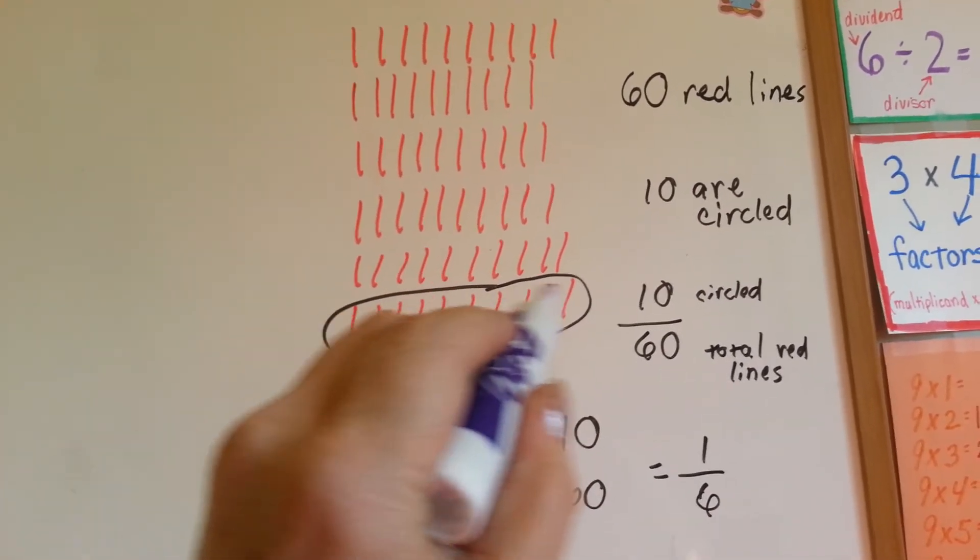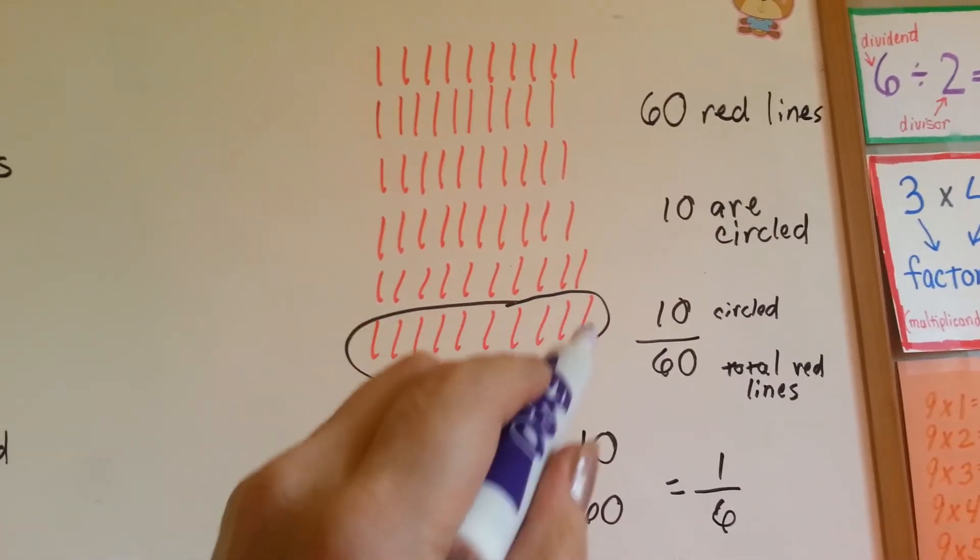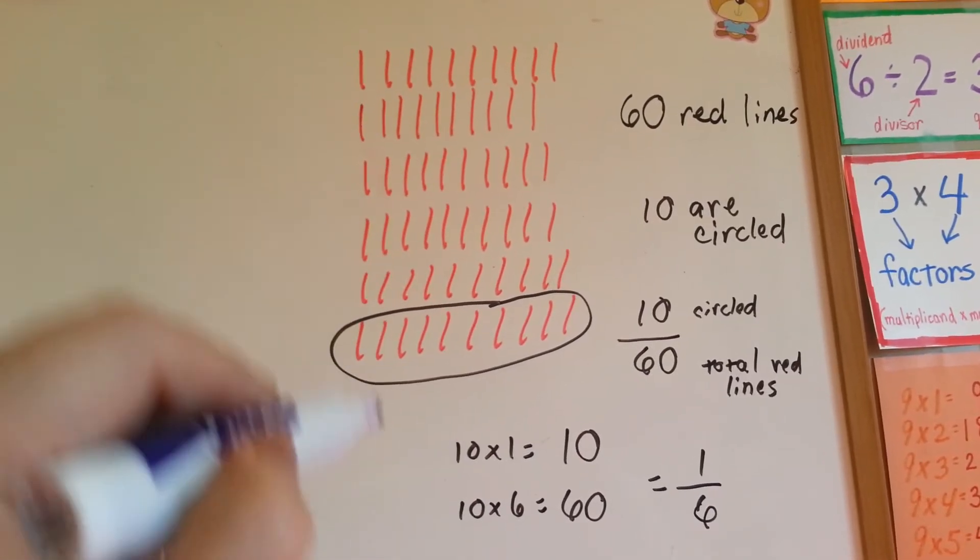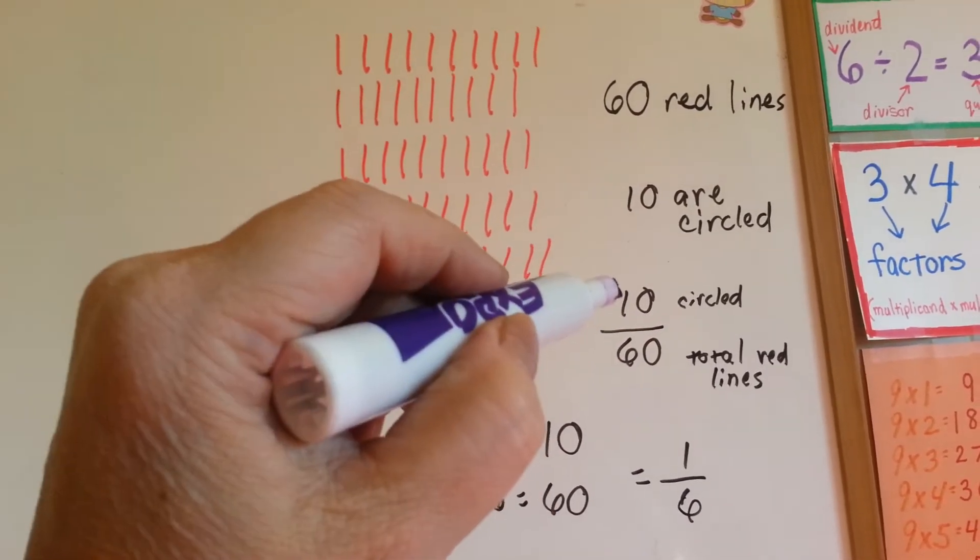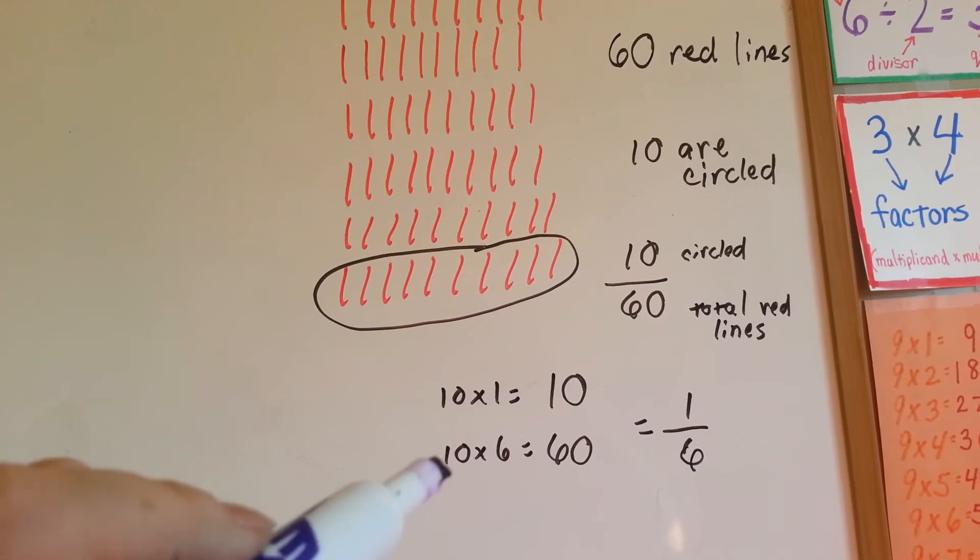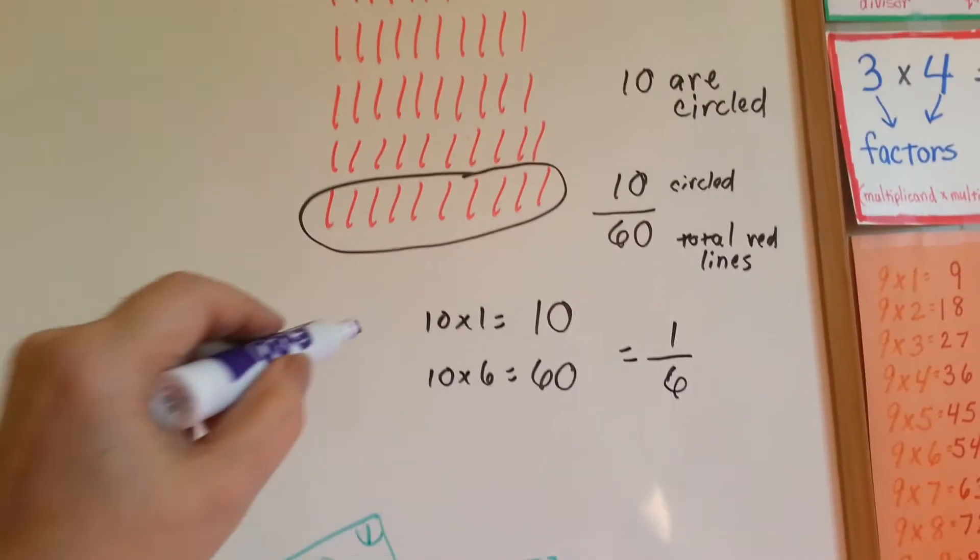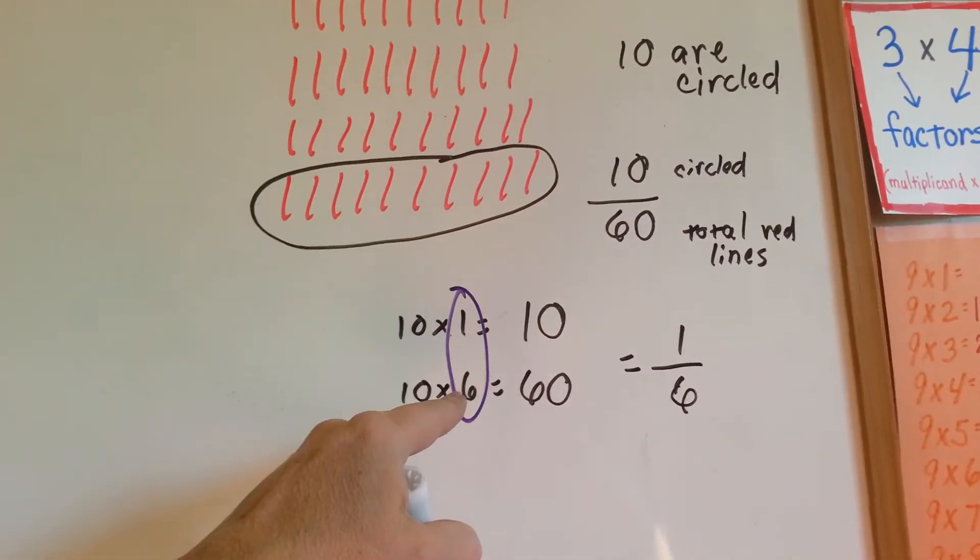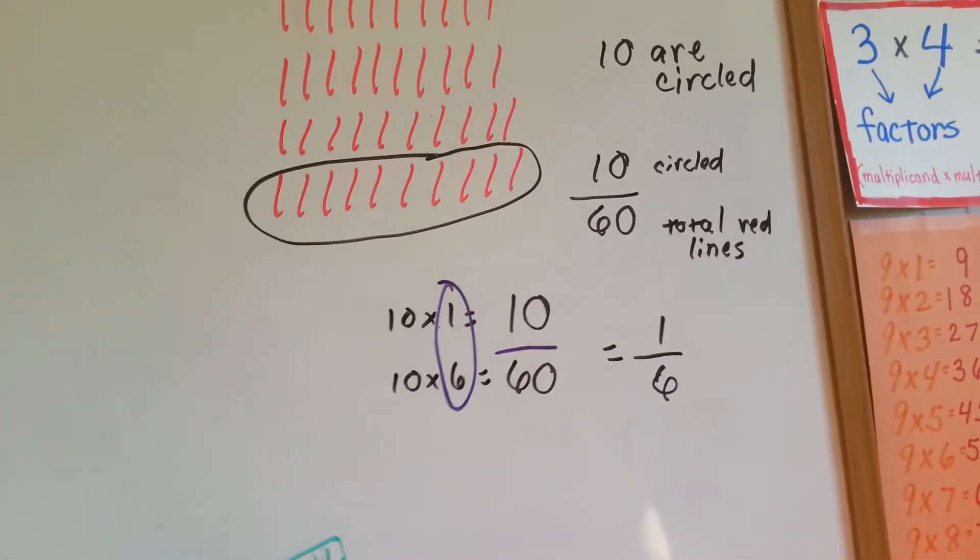If you took a group of ten, you would have ten of the sixty red lines. You would have ten-sixtieths. Ten times one is ten. Ten times six is sixty. Again, here's our one-sixth, and here's our ten-sixtieths.